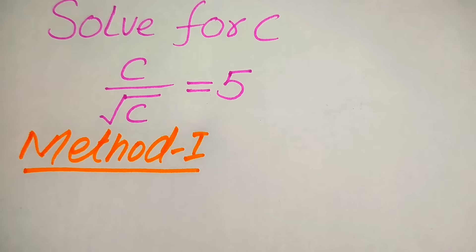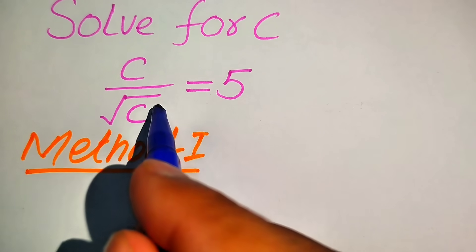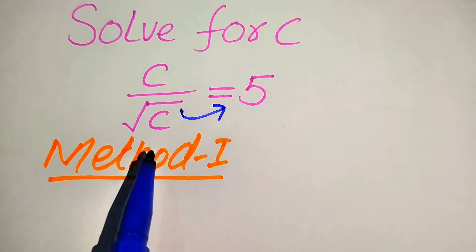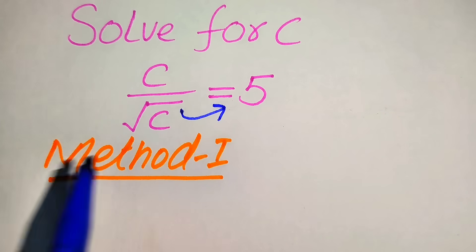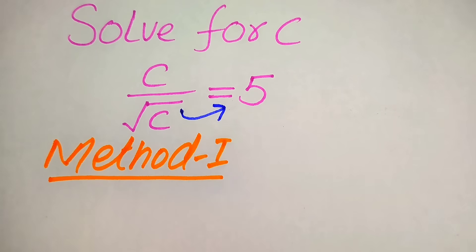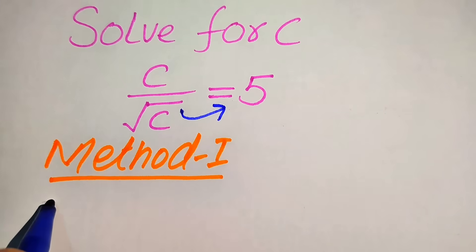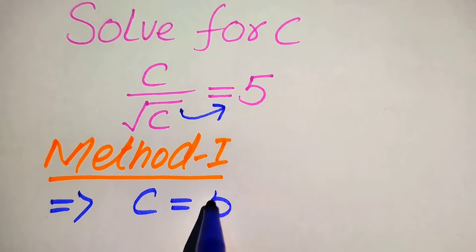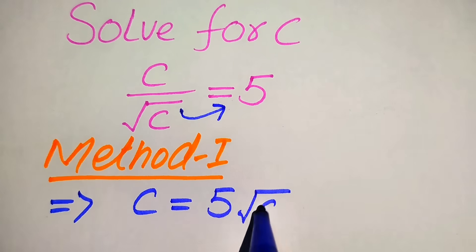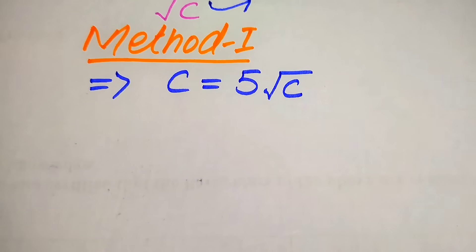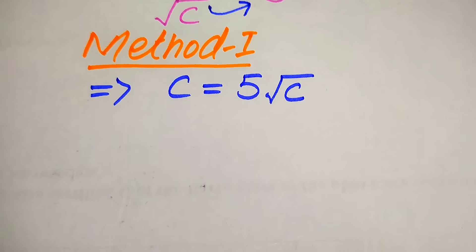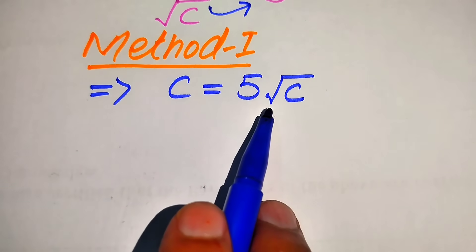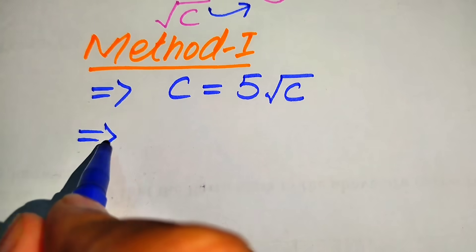In the first method, we move the square root of c to the right-hand side — when it was dividing on the left-hand side, moving it to the right-hand side makes it multiply by 5. After moving this value, it will be written as c equals 5 times square root of c. In the next step, we need to eliminate this square root sign from the right-hand side, so we will take squaring on both sides.